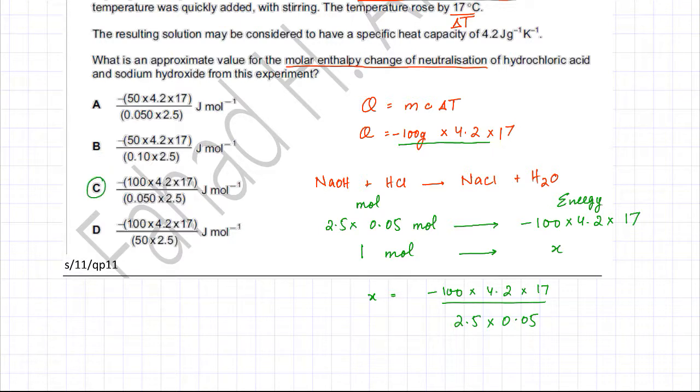Option C exactly matches with the energy change that we are getting for 1 mole. So remember the first thing we did was we calculated the energy change using mc delta t and it came out we had 100 grams of solution.